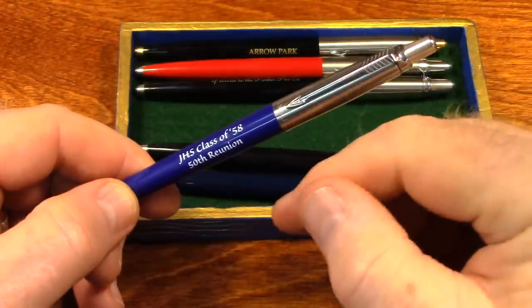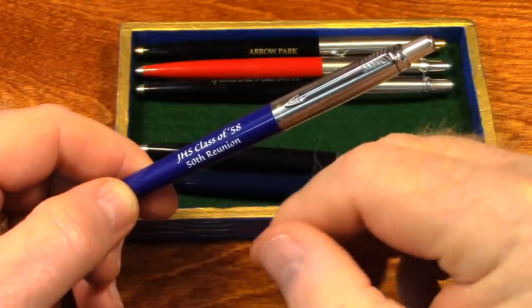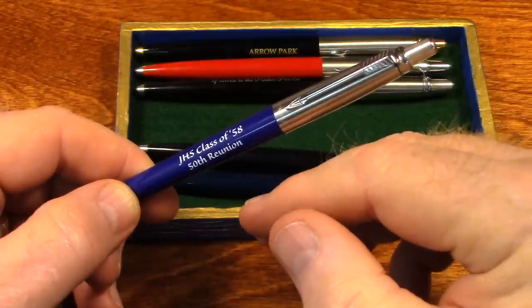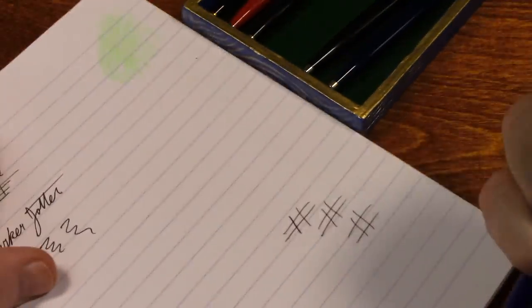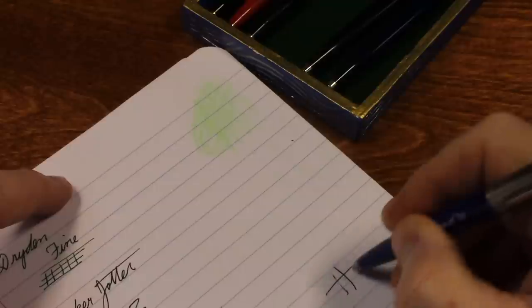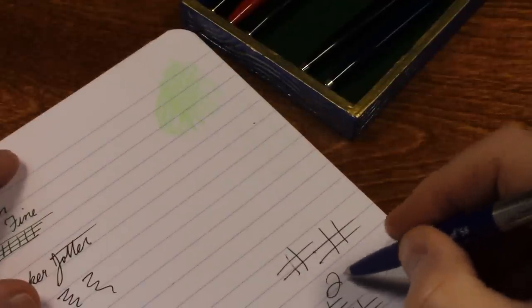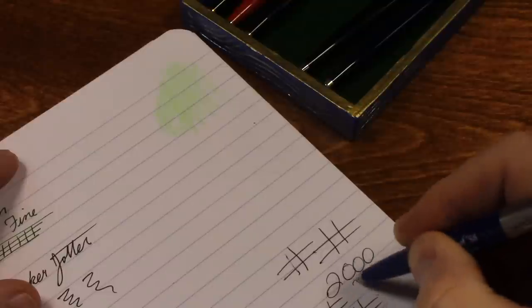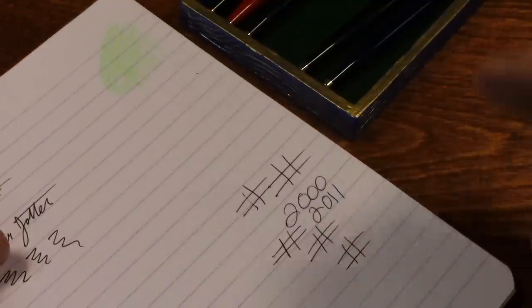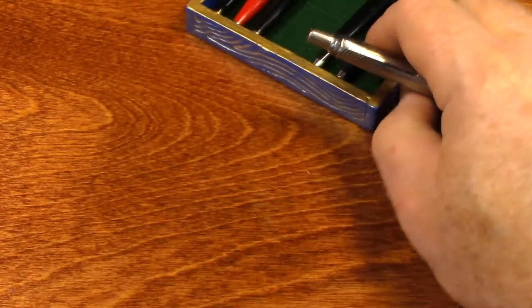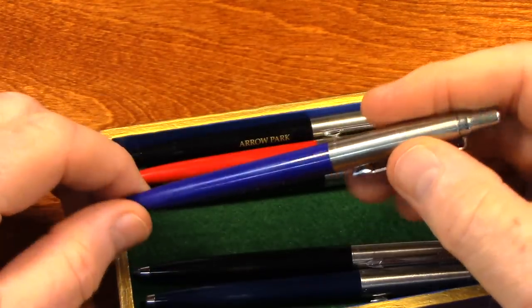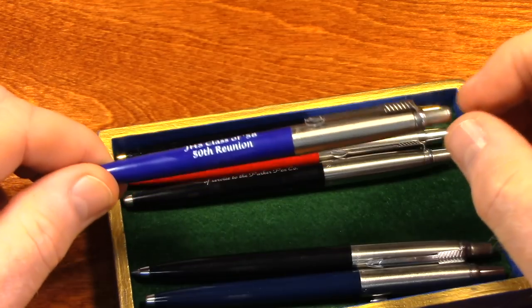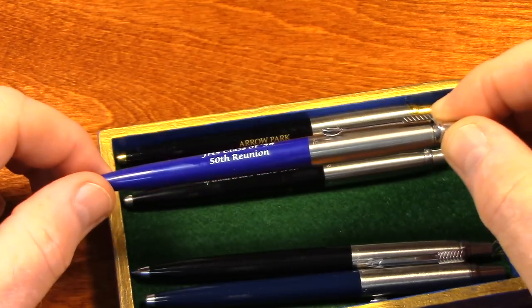So they made them in the United Kingdom from 2000 to 2011. And after 2011, they moved the production to France. And as far as I know, that's where Jotters are made today, France.